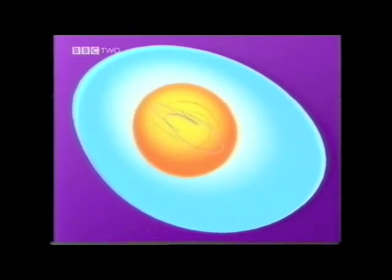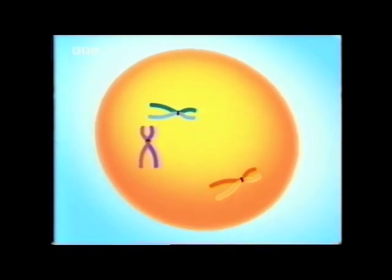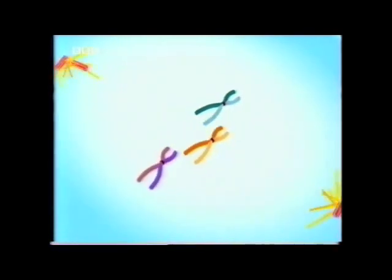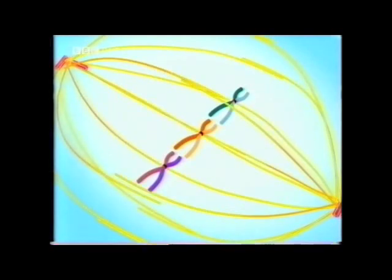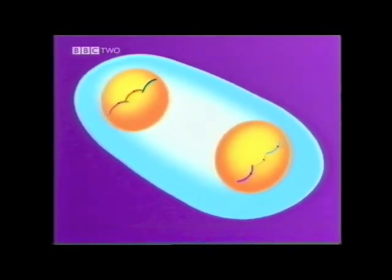Before a cell divides, it makes a copy of every chromosome's DNA. The nuclear membrane dissolves and the chromosomes line up in the centre of the cell. The chromosomes are pulled to opposite sides of the cell. New nuclear membranes form around the chromosomes, and the cell begins to divide.